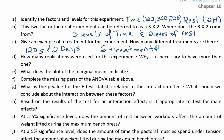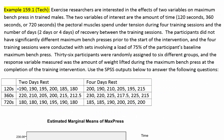Part D asks how many replications were used. They had 36 subjects but only six treatments. That means, if divided equally, there are six replications — for every treatment, six people underwent that treatment, giving 36 participants total. You can verify this by scrolling up to the data: for two days rest and 120 seconds, there are six measurements, and six measurements for each of the other combinations as well.